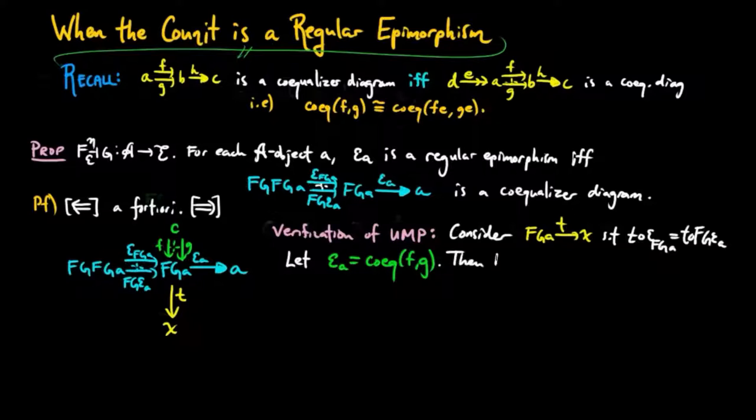And then by the observation above, epsilon A is also the co-equalizer of F epsilon C and G epsilon C, since epsilon C is an epimorphism by assumption.